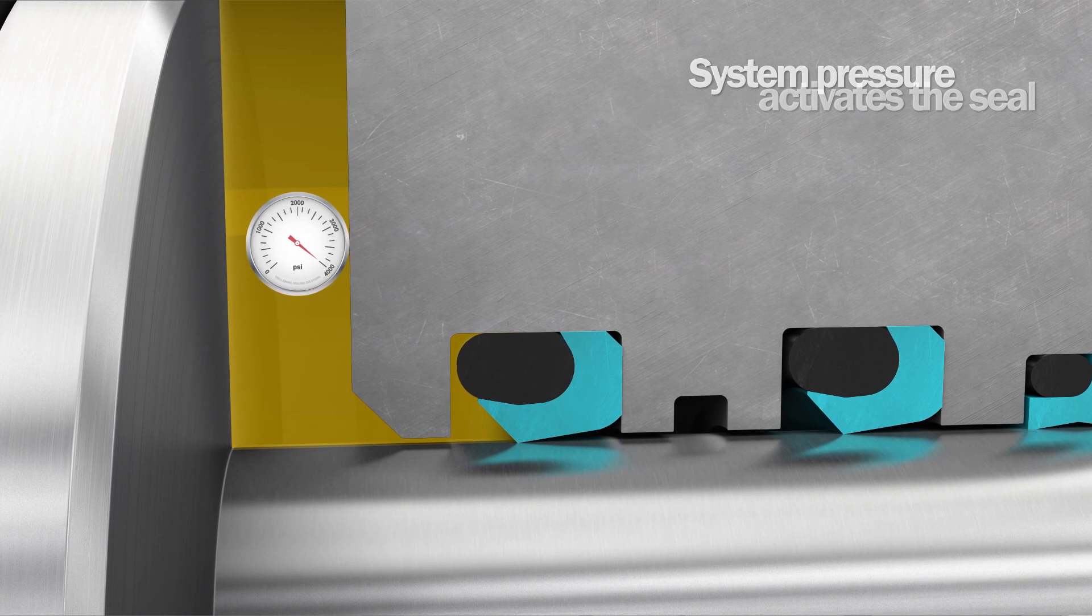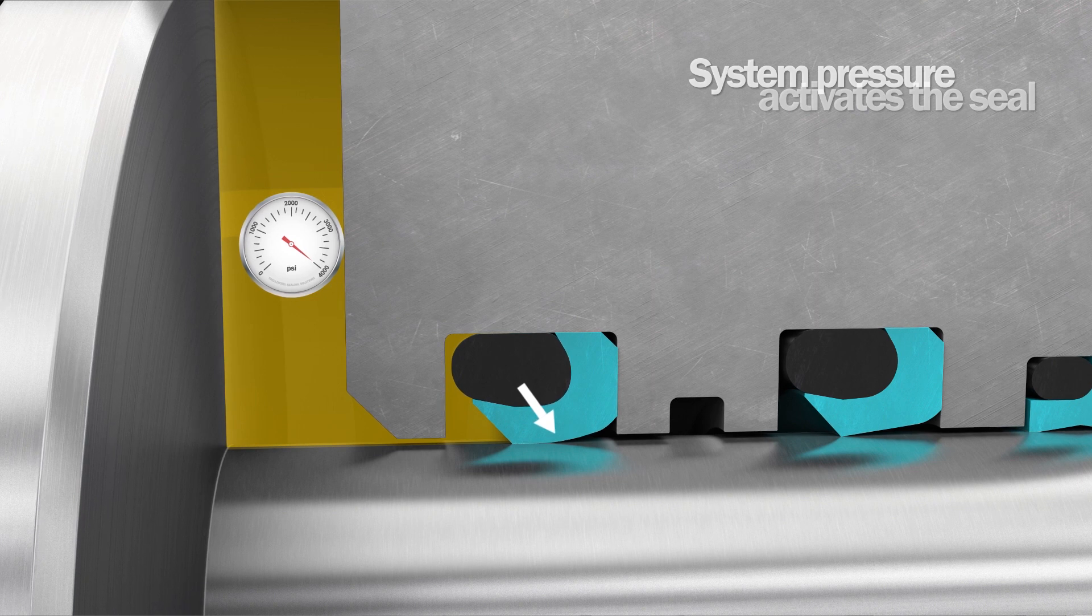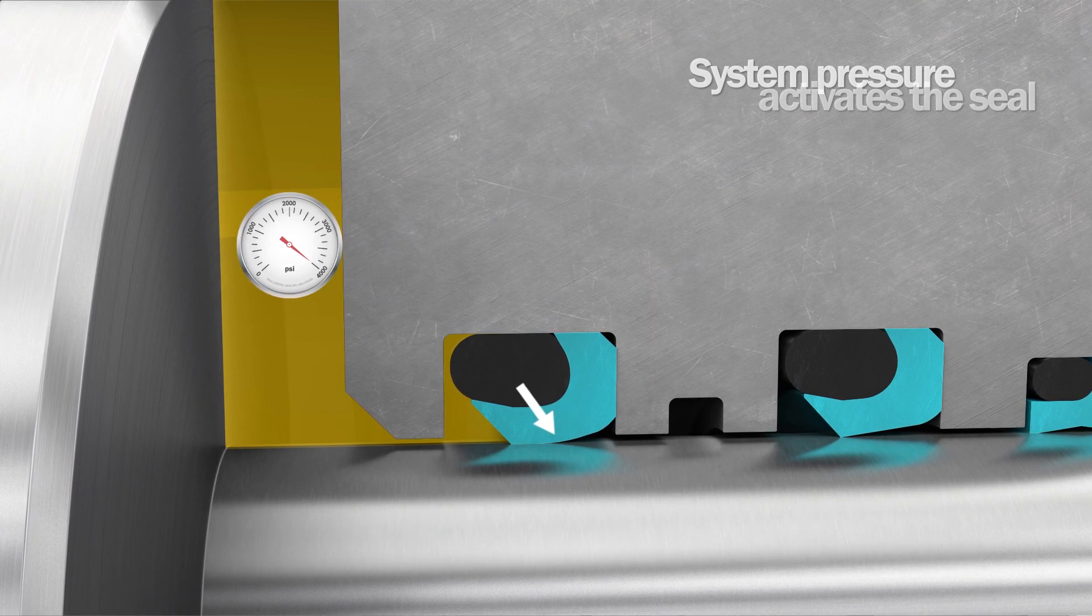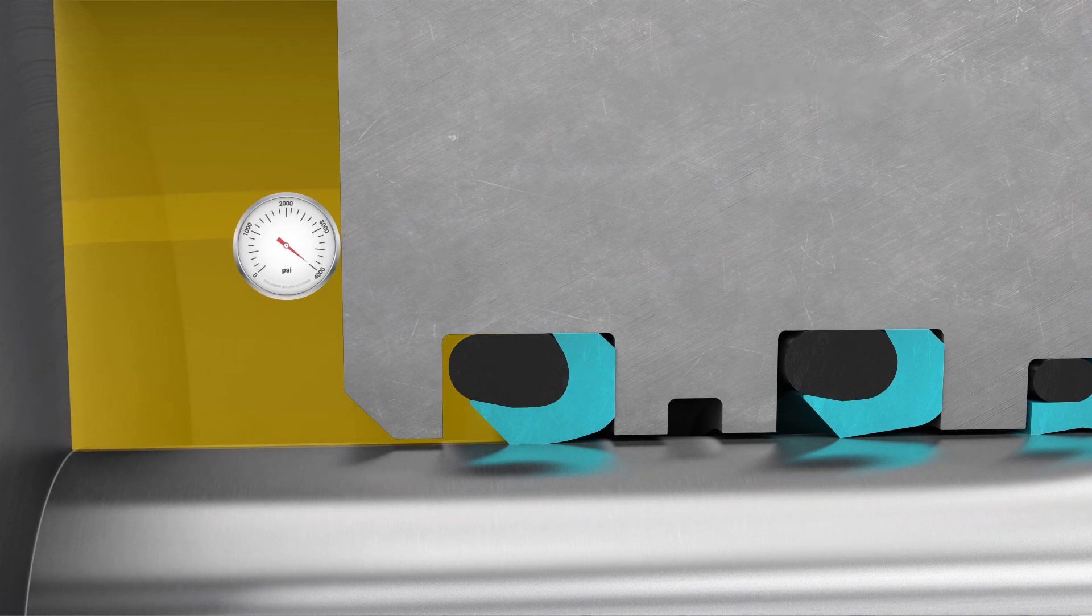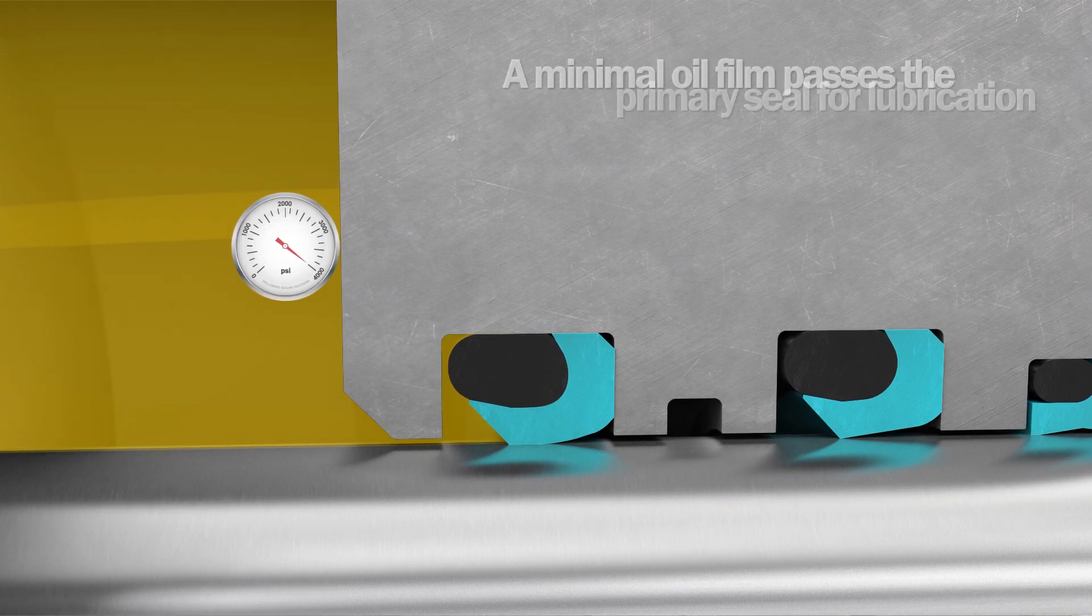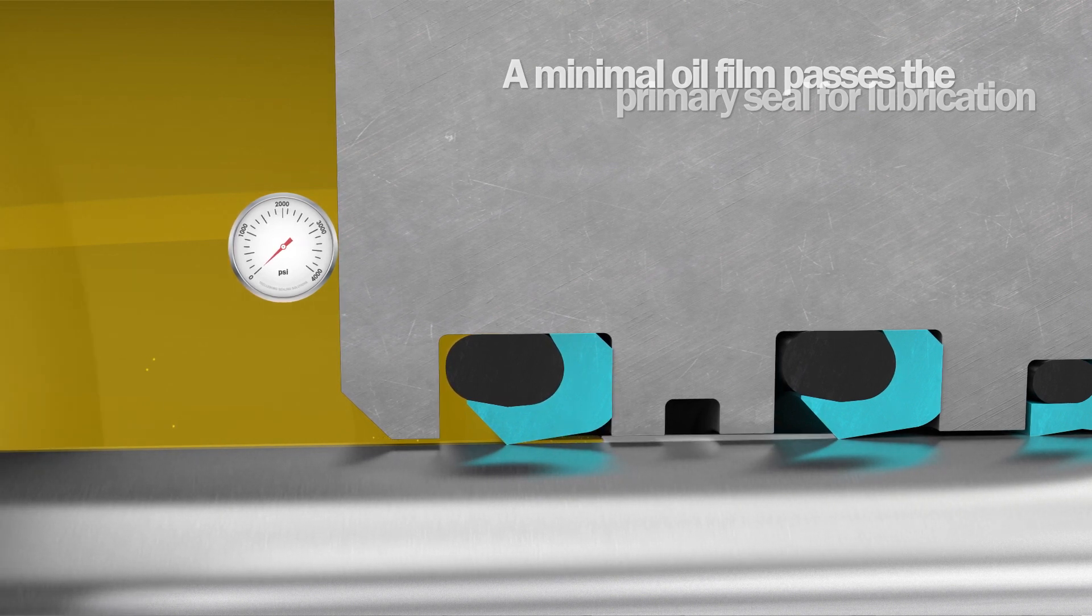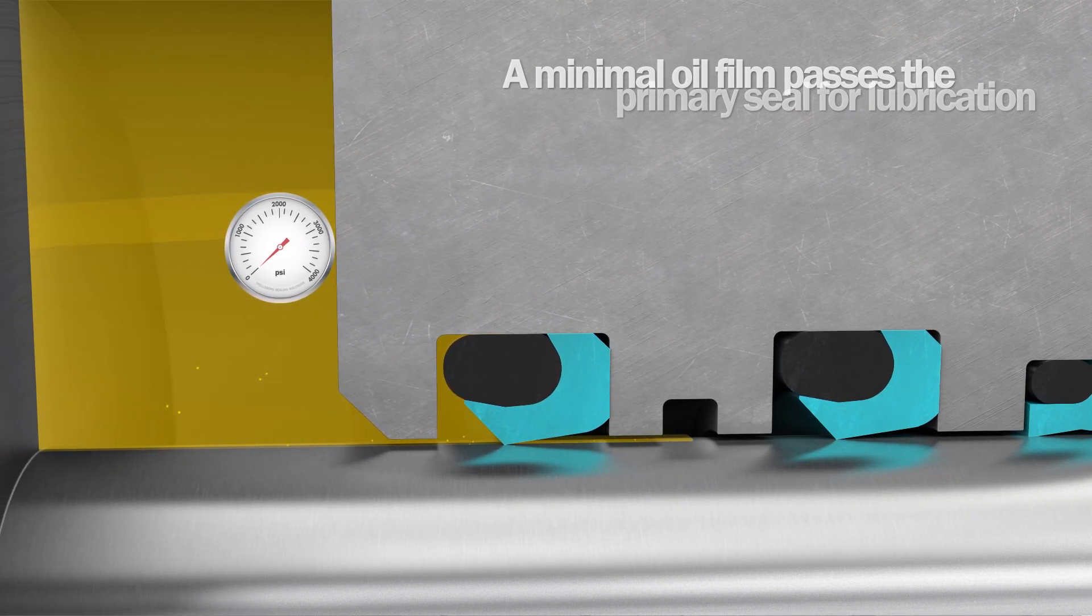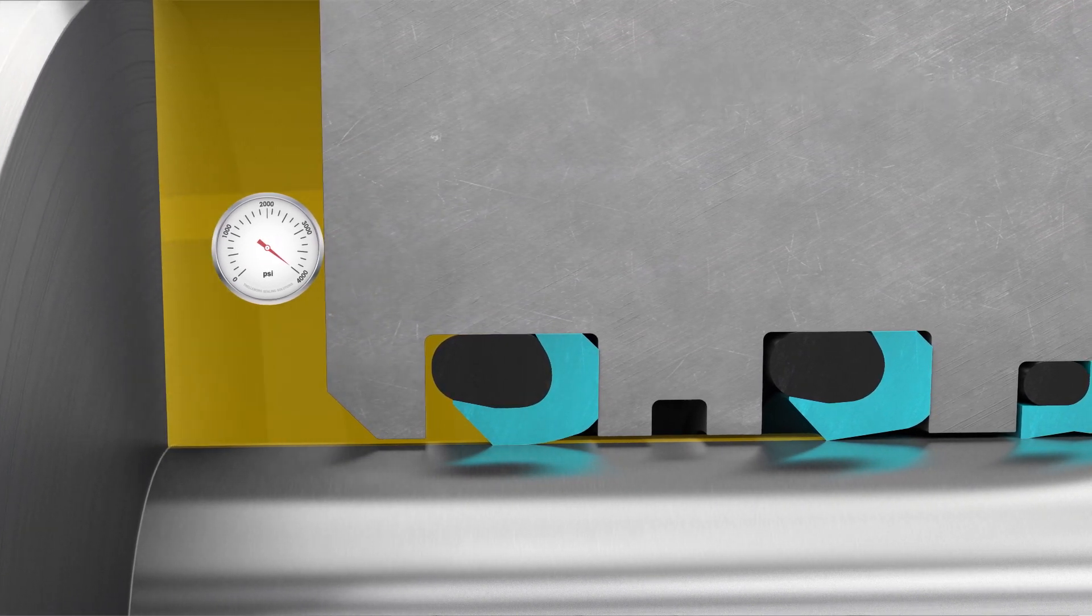Under pressurized conditions, as the rod moves, the seal activates. A small quantity of oil is allowed to pass the primary seal into previously unlubricated areas, allowing lubrication of both the primary and secondary seals.